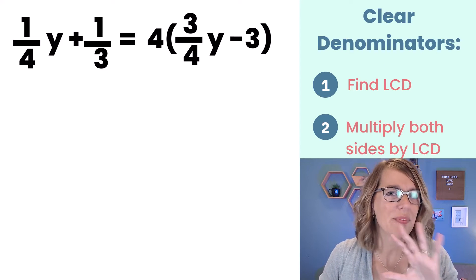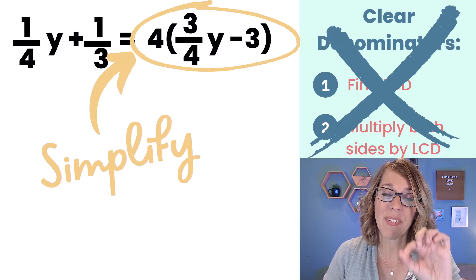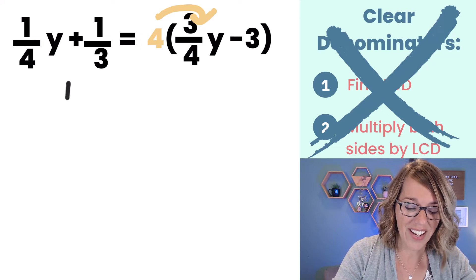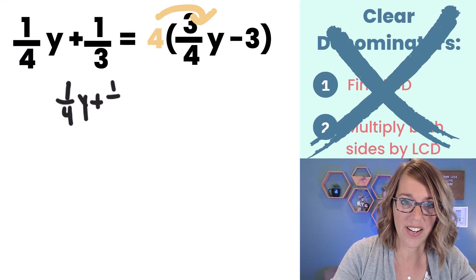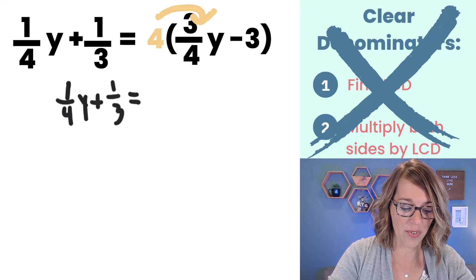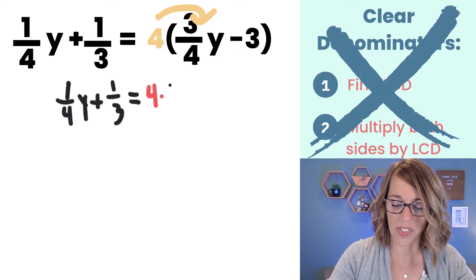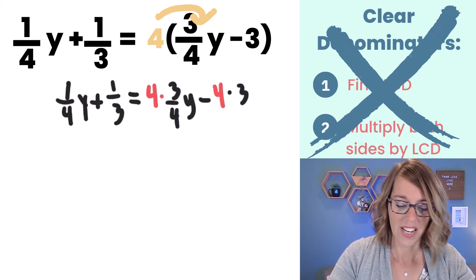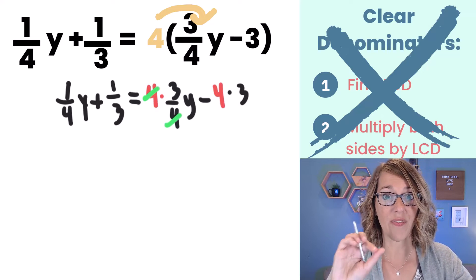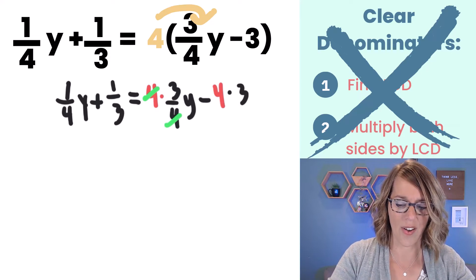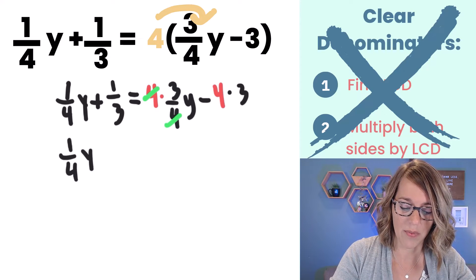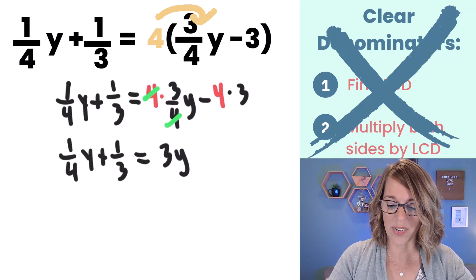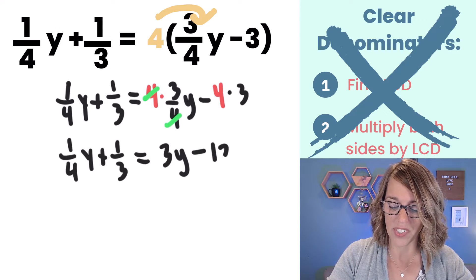In this next one we again have fractions and we really want to clear those denominators but we need to start by simplifying this right hand side first. Let's go ahead and do this distribution moving that 4 inside. On the left hand side I've got 1/4y plus 1/3. On the other side I'm going to multiply that 4 through. So I end up with 4 times the 3/4y minus the 4 times the 3. Now as I'm simplifying I can cancel the 4s in that first fraction on the right side. So I canceled those 4s and I have just the 3y left and then I've got the minus 4 times 3 which is going to be a minus 12.